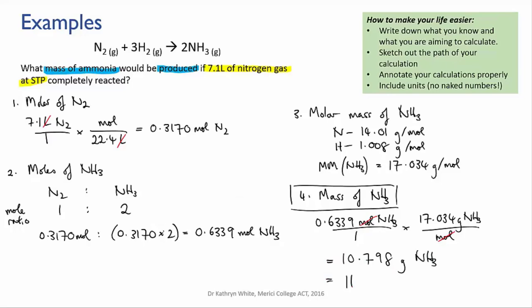which we round to 11 grams because we started with a value that had two sig figs. Great. Now, remember, like anything, this gets easier with practice. Make sure you put in the practice so that this aspect of chemistry becomes a simple calculation task rather than a source of stress.